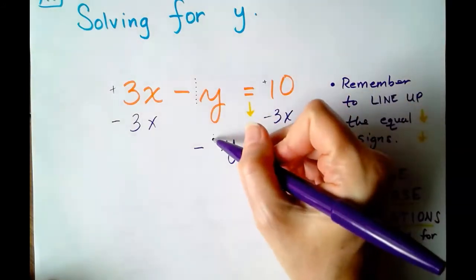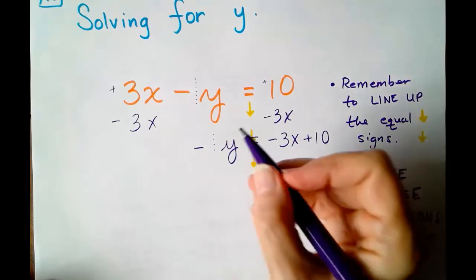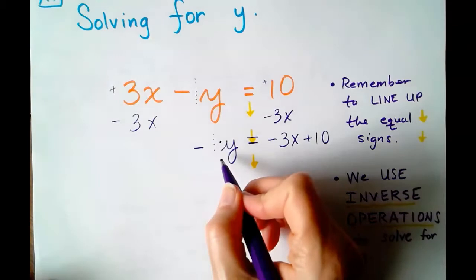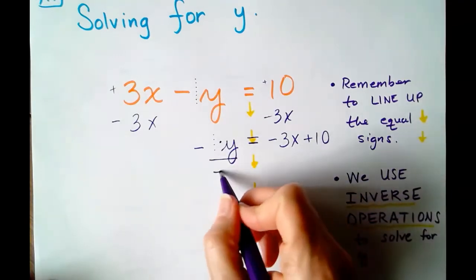And I am going to put it in this order, and we'll see why in just a second. Next, remember, I have negative Y. So negative Y means negative 1Y. So to undo a negative 1 times Y, I'm going to use the inverse operation, which is division by negative 1.